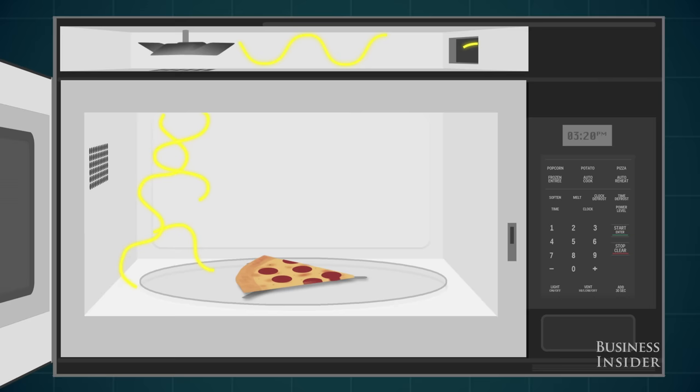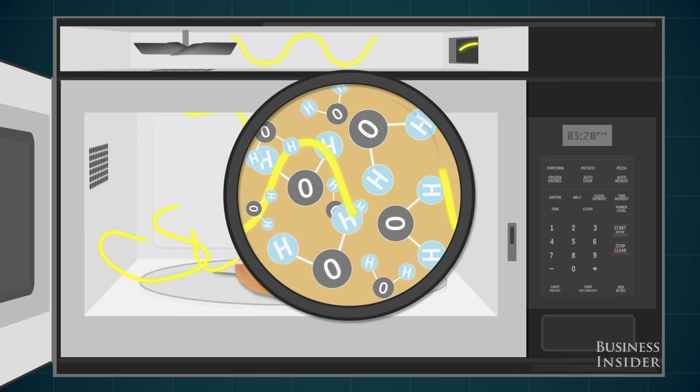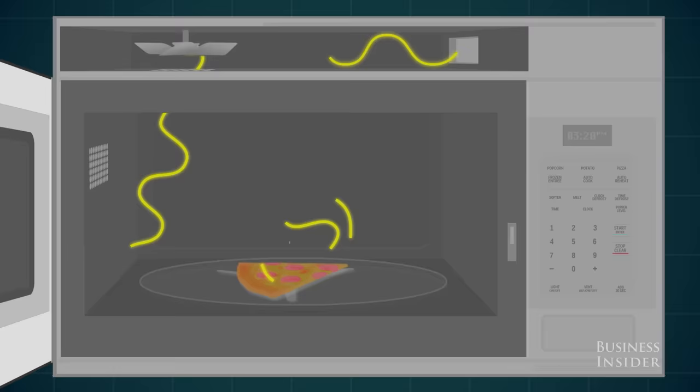The radio waves heat the water inside food by pushing the tiny pieces water is made of to make them go faster. As the pieces move faster, they get hotter, which makes the food warmer.